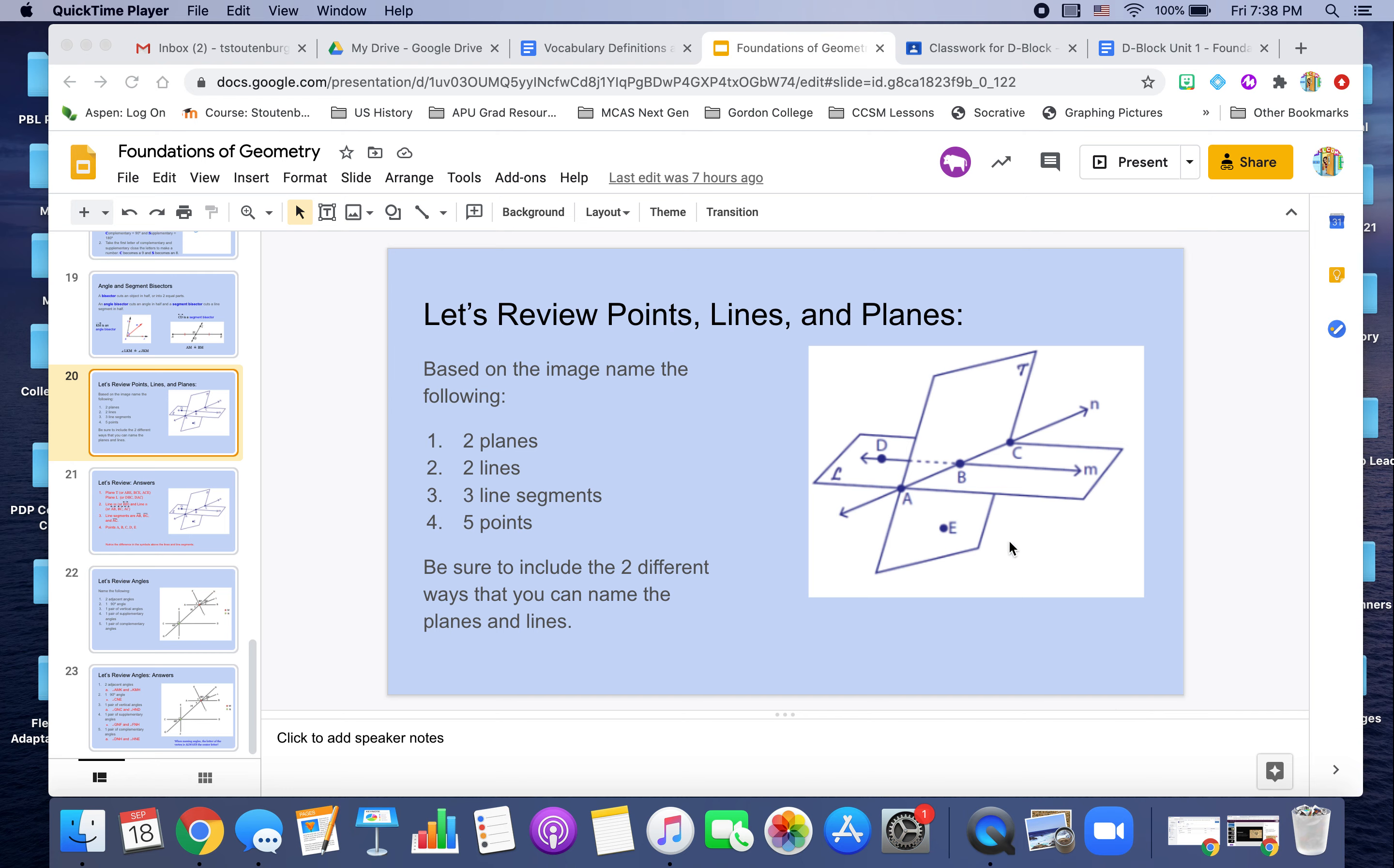So based on this diagram here, I'd like you to identify two planes, two lines, three line segments, and five points.